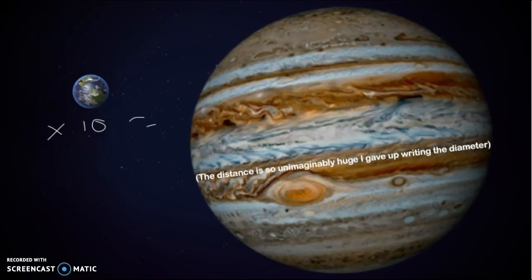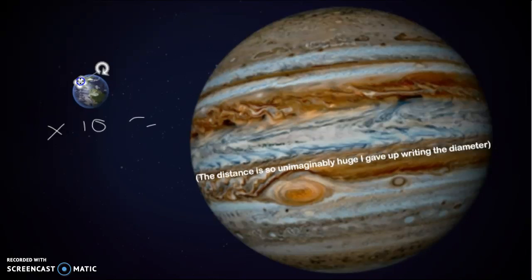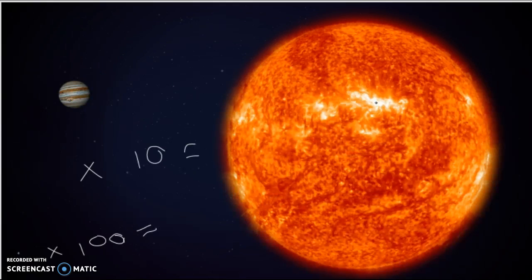And if you remember that big chunk of USA right here, it's actually this small compared to Jupiter. And then you see Jupiter compared to the Sun. Jupiter's diameter times 10 is equal to the Sun's diameter.